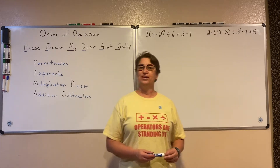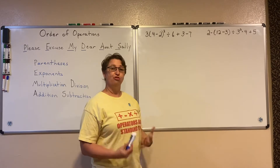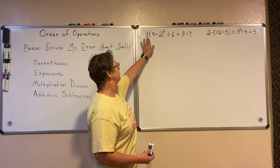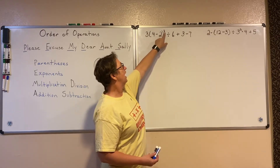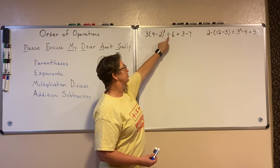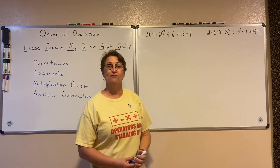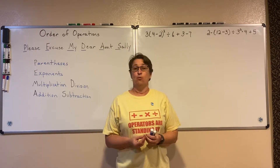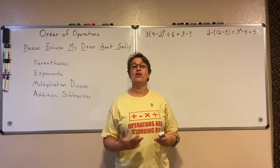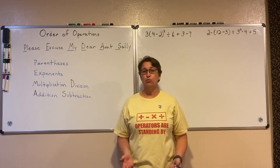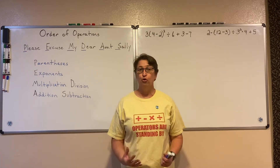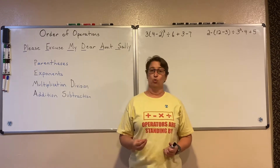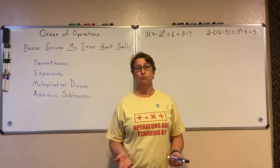When we have an expression where we have multiple things to do — for instance, multiplication, subtraction, exponents, division, addition, and subtraction — we have multiple operations to perform. If we don't all do them in the same order, we may end up with different answers. So we have a set of rules in math, an order of operations, that we perform to make sure we all end up with the same answer.